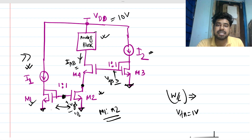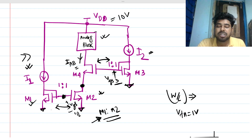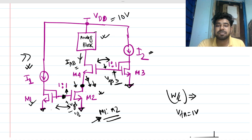This transistor is not in the current mirror — that much is clear for now. We need to predict what voltage appears at that node VX. If there is sufficient voltage at VX, M1 and M2 will be in saturation. If VGS of M3 is very large and VGS of M4 is very low, this VX node will try to become lower. Both conditions are driving the VX node downward.